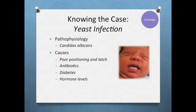Next, we move on to knowing the case. Yeast infections, also known as thrush, are caused by the fungus Candida albicans. This fungus thrives in warm, moist, dark areas and replicates in the presence of sugars, including those sugars in breast milk. The change from a dry to wet atmosphere, like in a lactating mother, also creates favorable conditions for yeast overgrowth.